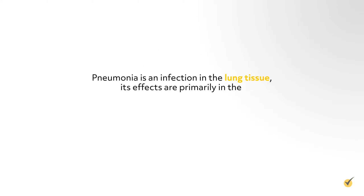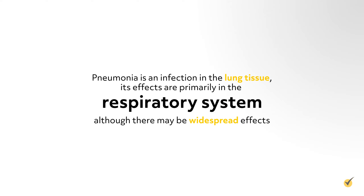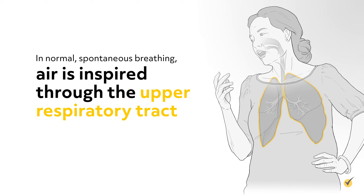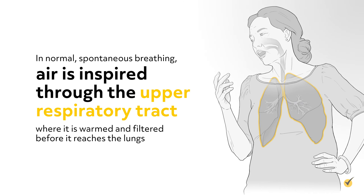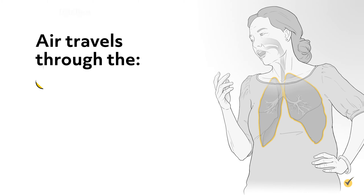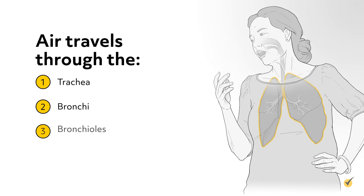Because pneumonia is an infection in the lung tissue, its effects are primarily in the respiratory system, although there may be widespread effects as well. In normal, spontaneous breathing, air is inspired through the upper respiratory tract, where it is warmed and filtered before it reaches the lungs. Air travels through the trachea, bronchi, and bronchioles before it reaches the alveoli, where gas exchange occurs.